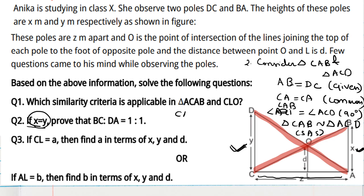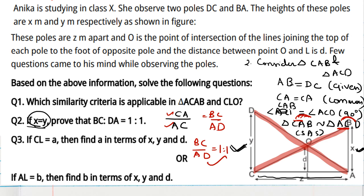From the similarity, by CPSD we write CA by AC equals BC by AD. These common terms cancel, giving BC by AD equals 1 is to 1. Hence proved.